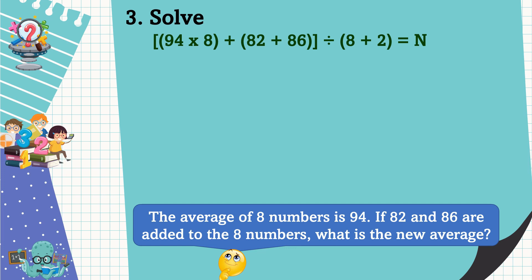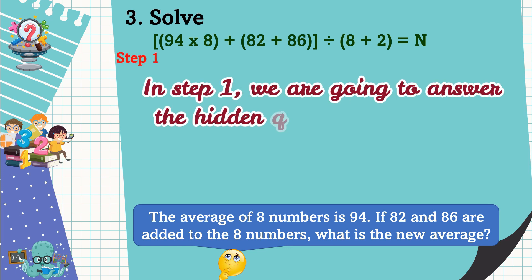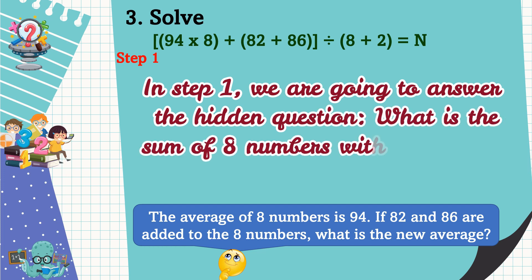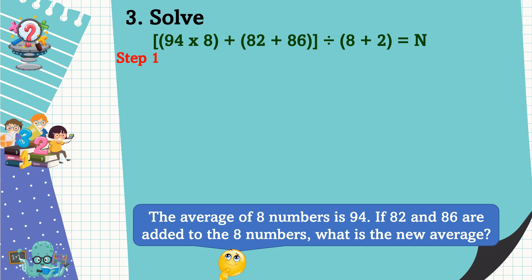Since we have already planned, let's solve the problem. We can solve it using the order of operations, but the order of operations is not yet introduced to you, so we're going to solve it step by step. For step 1, we're going to answer the hidden question: what is the sum of eight numbers with an average of 94? To get the sum, we're going to multiply 94 and 8.